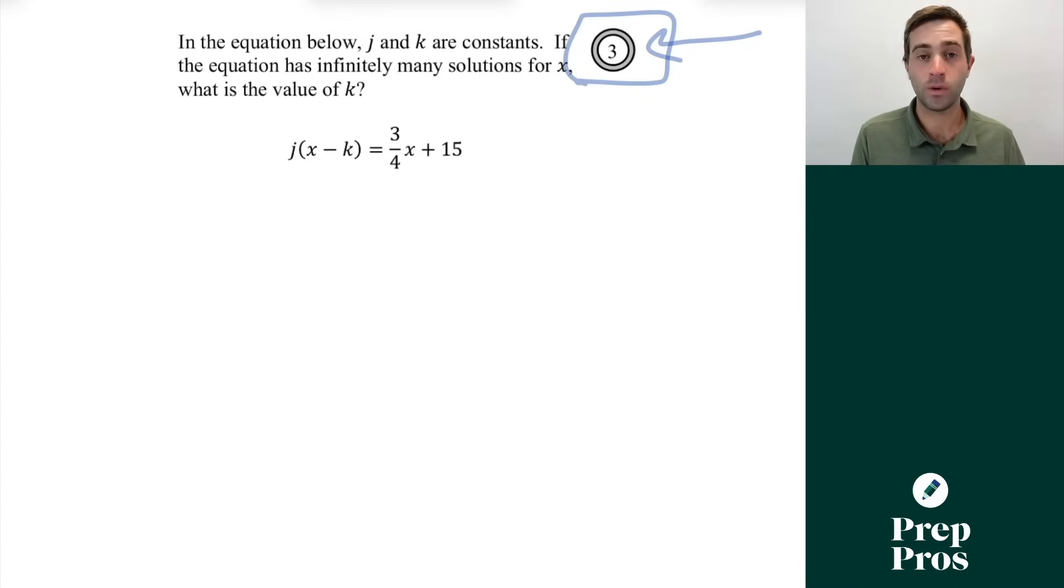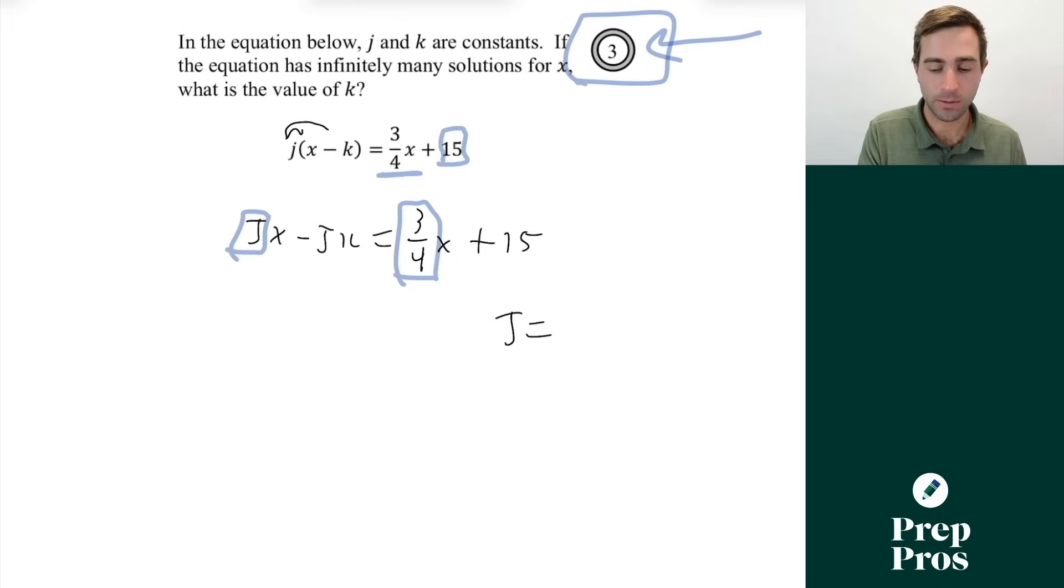But here if we have infinite solutions what we need to understand is if we think about these like a linear expression we need to have the same slopes and the same y intercepts on both sides of this equation. So the first thing we want to do is go ahead and distribute through that j. So this will give us jx minus jk is equal to three quarters x plus 15. So as we just talked about we know we must have the same slopes so also our x coefficients which are going to be our slopes must be the same. Therefore we know that j is going to be equal to three quarters. What we also know then is negative jk must be equal to 15 for us to have infinitely many solutions.